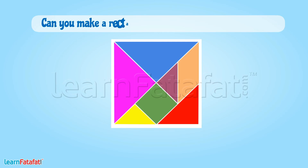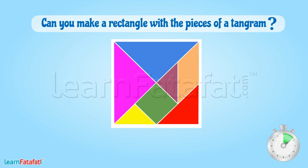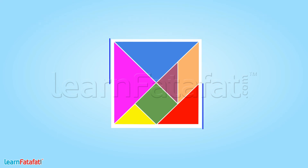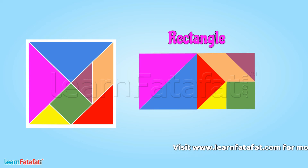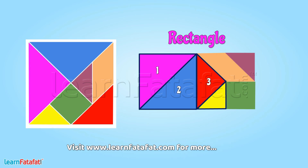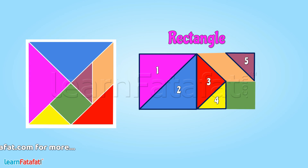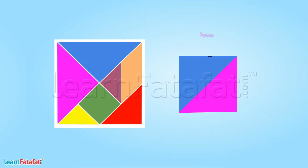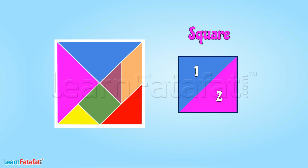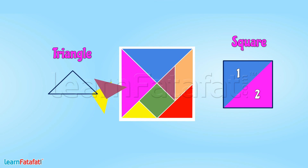Can you make a rectangle with the pieces of a tangram? Yes! The pieces of a tangram can be arranged to get a rectangle. Can you tell how many triangles are there in this design? There are five triangles. Can you make a square using two triangles? Yes! We can make a square from two triangles. Similarly, we can also make a triangle from two triangles. Now try to make different designs using a tangram.